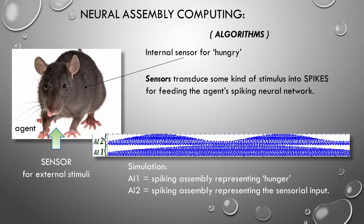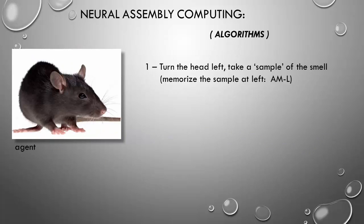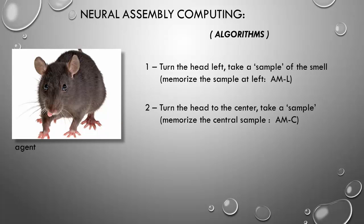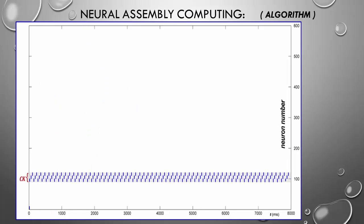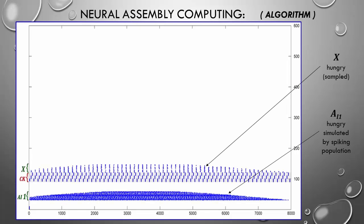The task for this algorithm is to lead the agent in the food direction. It can be achieved by following the higher level of the food smell. In order to do that, the agent has to turn its head left, has to take a sample of the smell in that direction, and has to memorize this value for comparison. Then, the agent turns its head to the center, takes another sample and memorizes it. Hence, it turns its head to the right, takes a sample of the smell, and compares the values in order to make a decision. Let's look how it happens in neural assembly computing. We use the CK assembly as a rhythm, as the system clock. Every time the lower CK assembly fires, we take a sample of the hunger representation, called here assembly X.